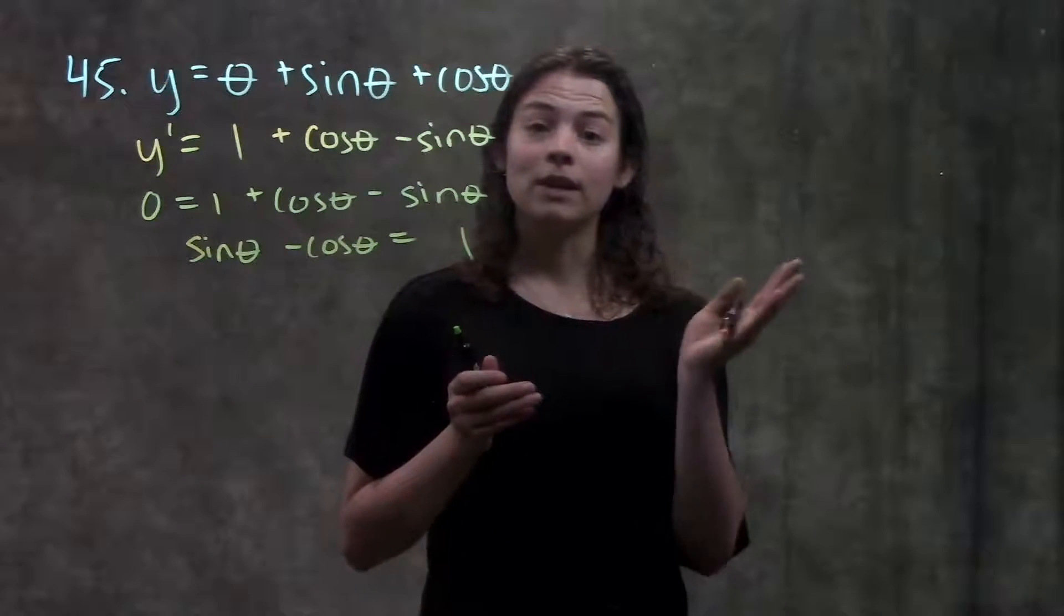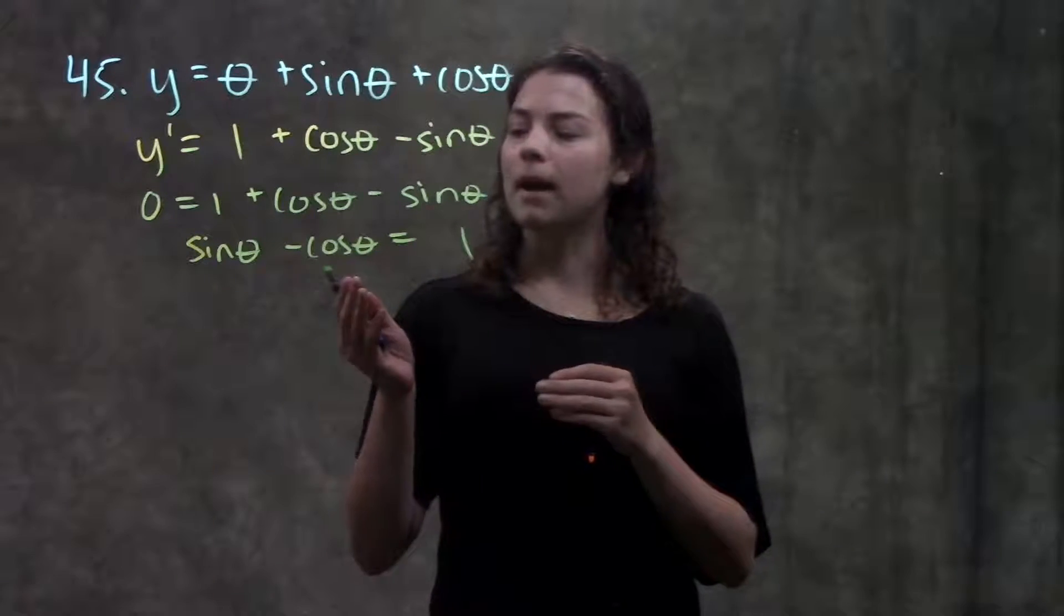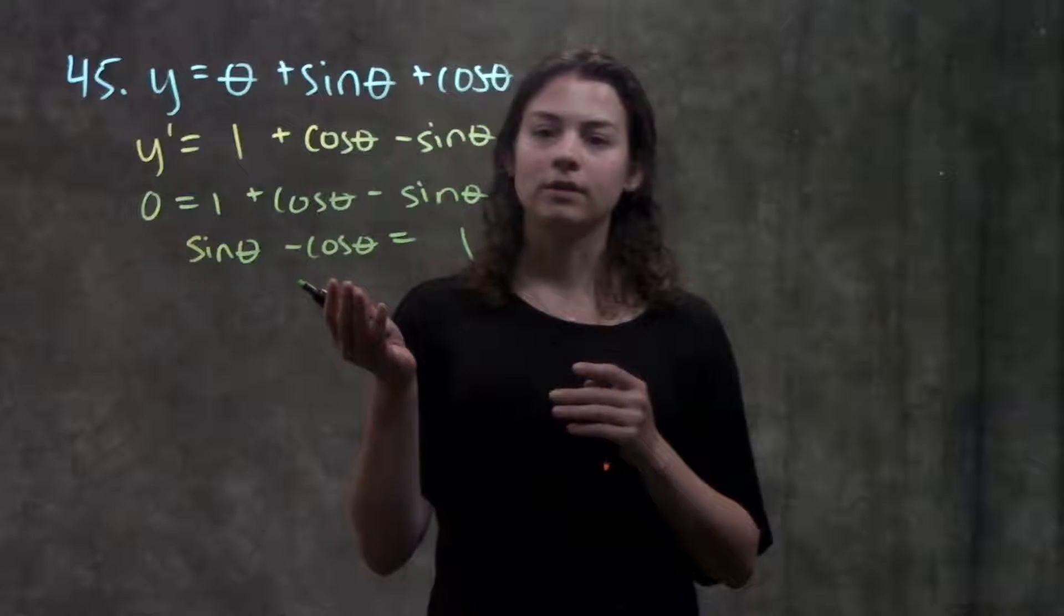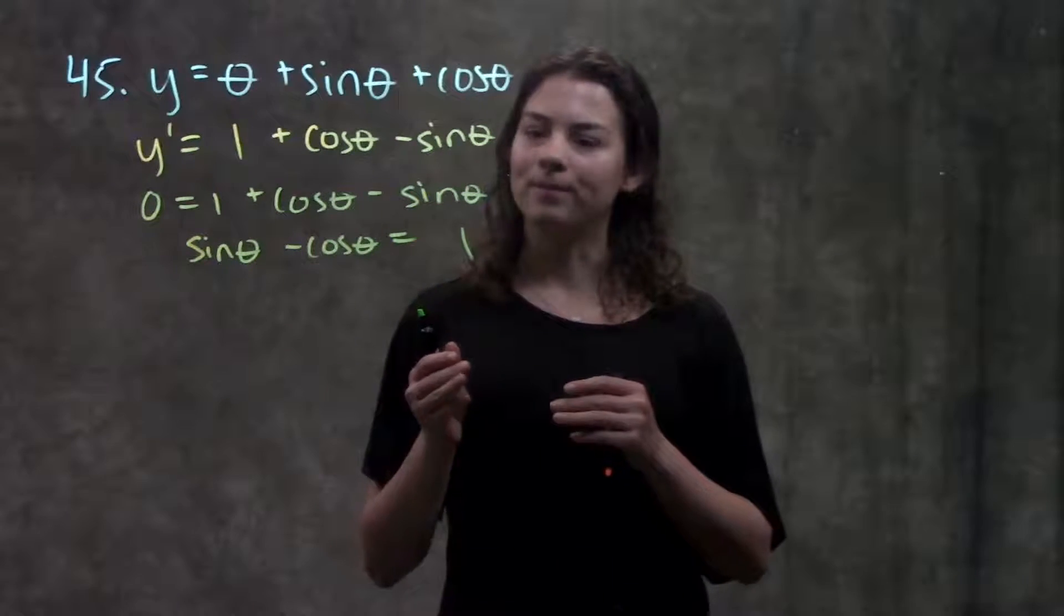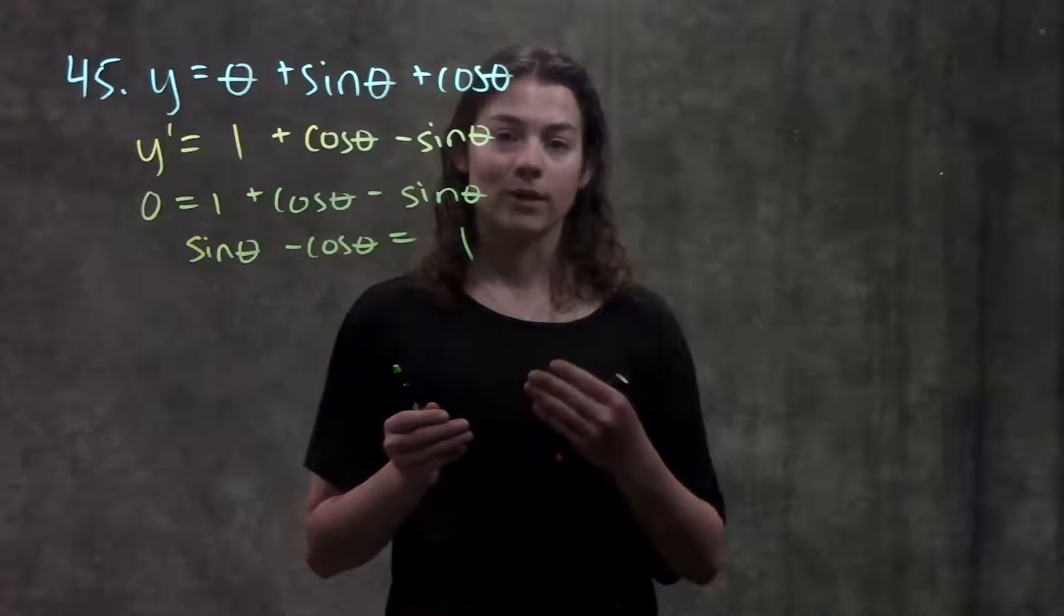Well if you remember at every 90 degree value at zero, pi over two, pi, and so on, my coordinate values for sine and cosine are either zero or one. So I'm just going to think through each of those angles and see which one works for this equation.